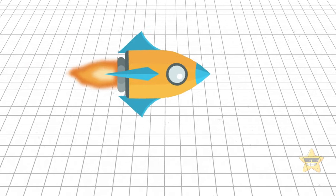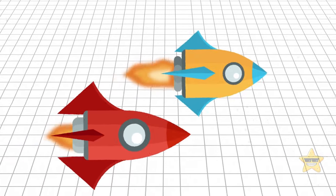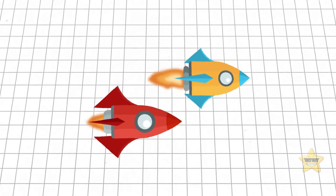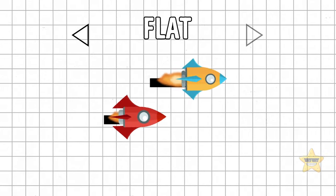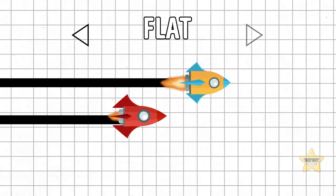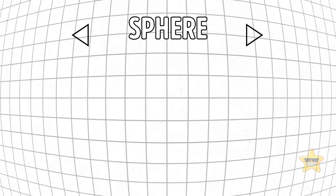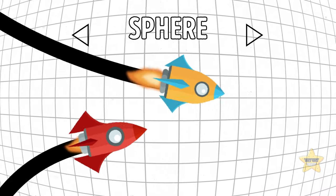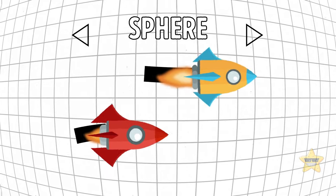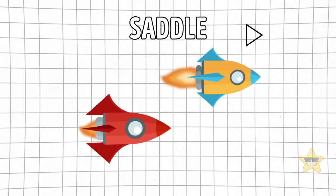In a flat universe, two rockets traveling side by side will always remain parallel. This is in contrast to a closed universe, where the rockets will travel along the curve of space and eventually meet where they started. In an open universe with negative curvature, the rockets will gradually drift apart and never cross paths again.